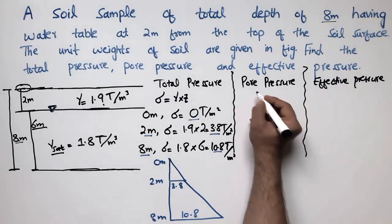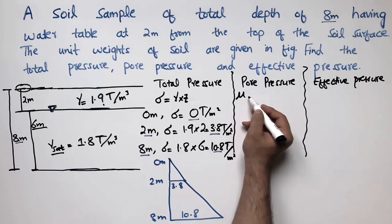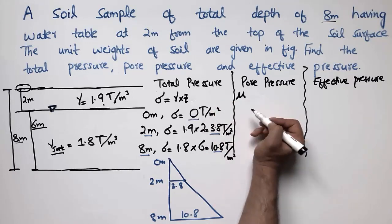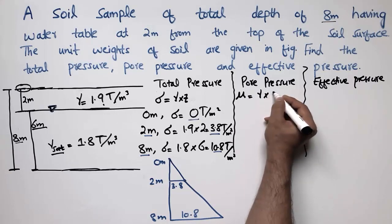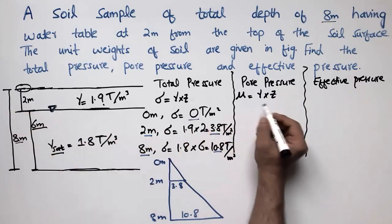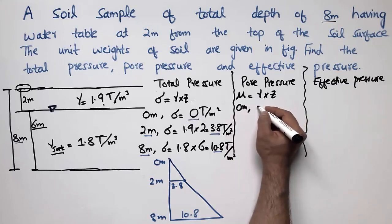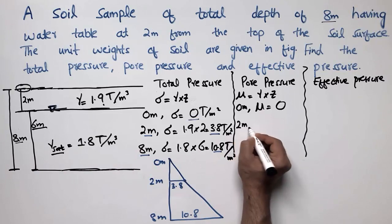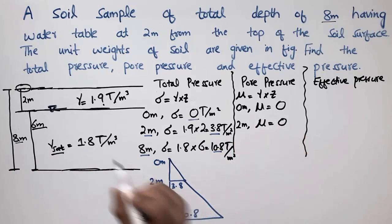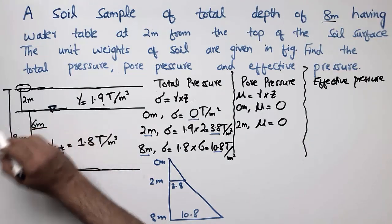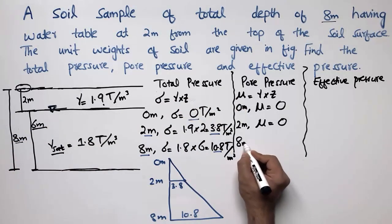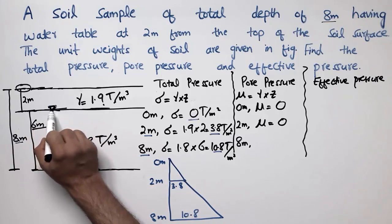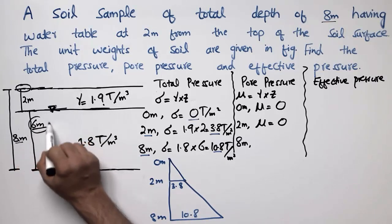For pore pressure, represented by u, the formula is similarly gamma times Z but it depends on the water table. At 0 meters, pore pressure is zero. At 2 meters from the top, pore pressure is also zero because the water table is at 2 meters, so there is no pore water pressure above it.